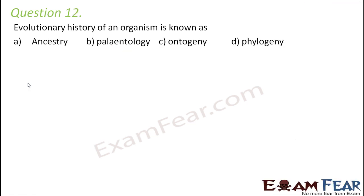Question number 12. The evolutionary history of an organism is known as phylogeny. The term phylogeny is derived from a Greek word 'phylo', which means tribe or race. So the evolutionary history is called phylogeny.